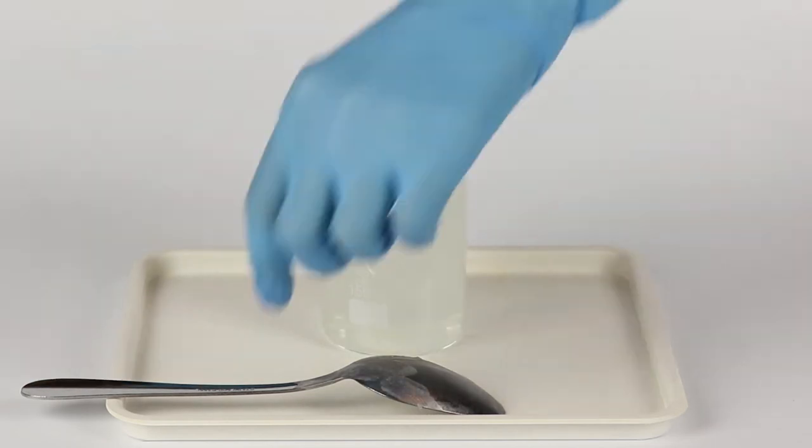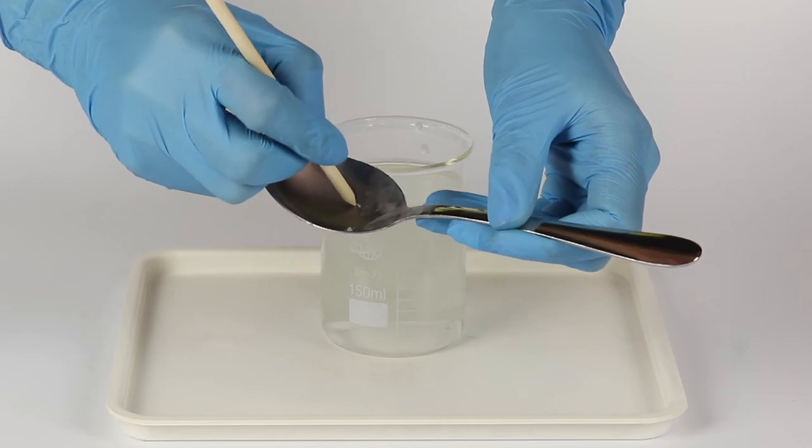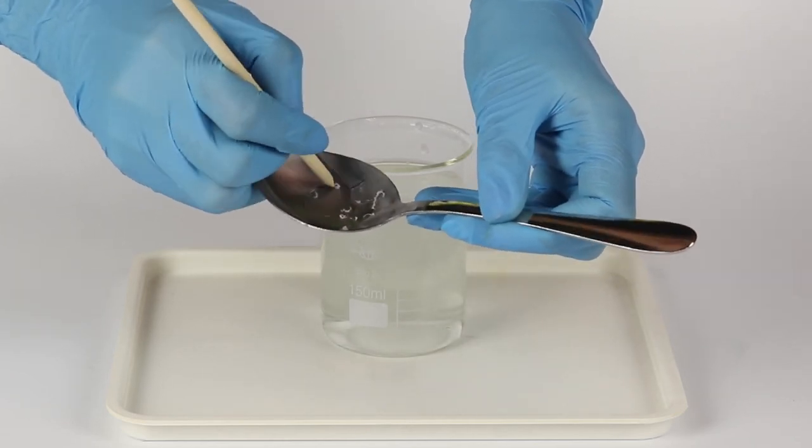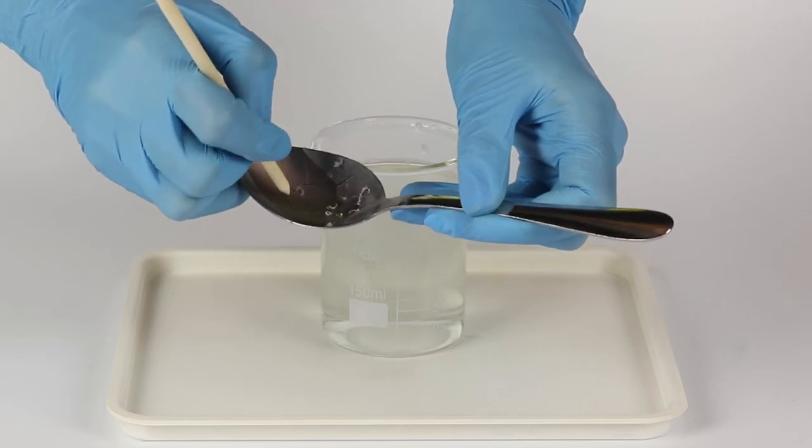Using the sharp end of the brush, draw a pattern in the paraffin, scratching it all the way through to the spoon's surface. An uncomplicated image with thick lines will work best.